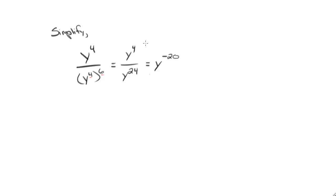And again, negative twenty is what I get when I take four minus twenty-four. Whenever you're simplifying exponential expressions, you can't answer with negative exponents.